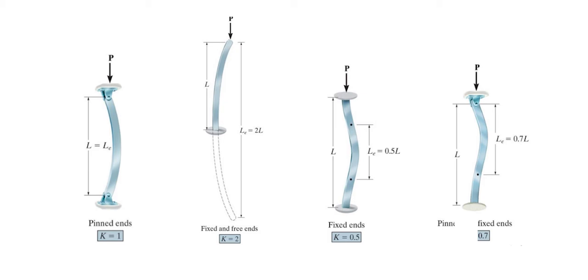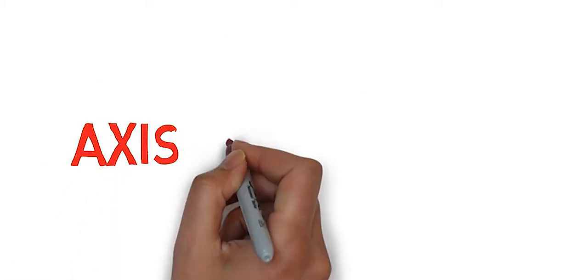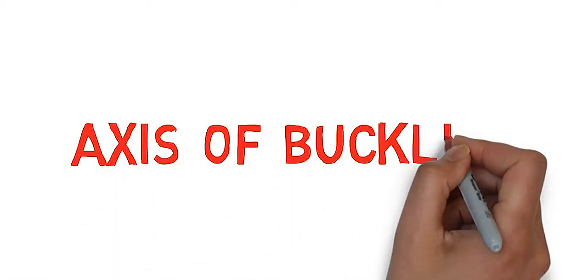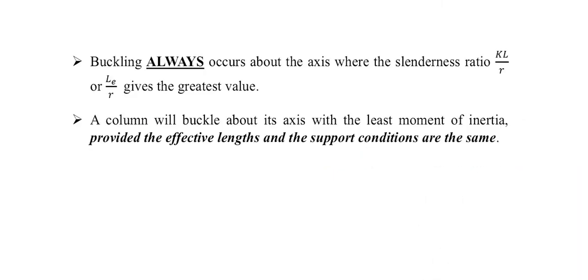For a column with pinned and fixed ends, the effective length is 0.7L, meaning K equals 0.7. Buckling always occurs about the axis where the slenderness ratio KL over R, or LE over R, gives the greatest value. A column will buckle about its axis with the least moment of inertia, provided the effective lengths and support conditions are the same.